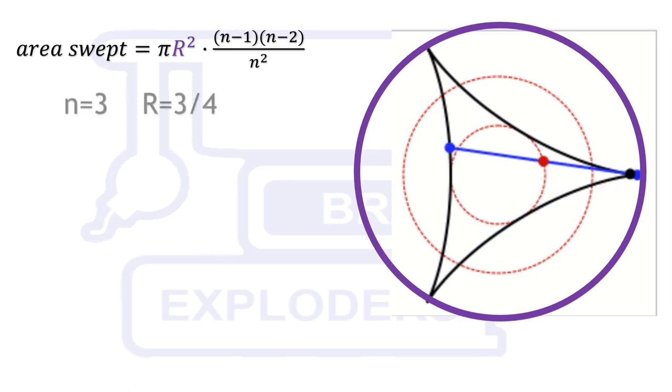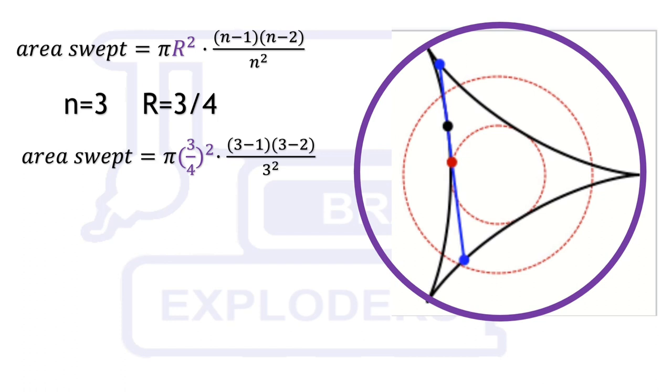Now let's calculate the area of this deltoid. We have made a video on how to calculate the area of a deltoid. This is the direct formula: pi r squared times n minus 1 times n minus 2 over n squared. Here n is the number of cusps and r is the radius of the outer circle. Since the length of the line segment is 1 unit, on the basis of that we can calculate that its radius will be 3 by 4. The link of the video is given in the i button. You get that area swept equals pi by 8 square units, approximately 0.393 square centimeters. This seems to be the minimum area in which a needle can be rotated through an angle of 360 degrees.